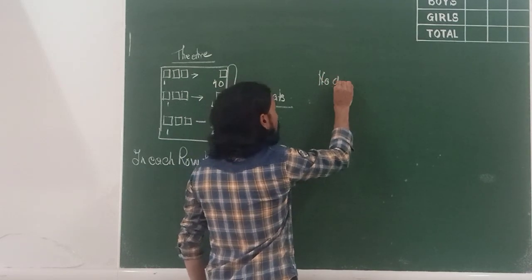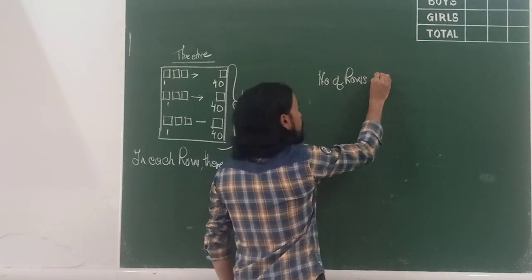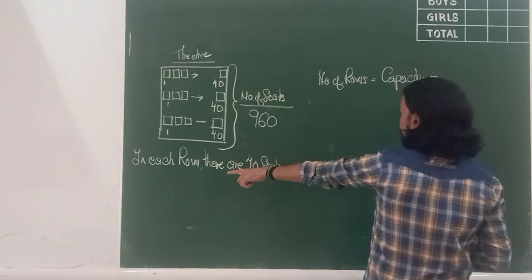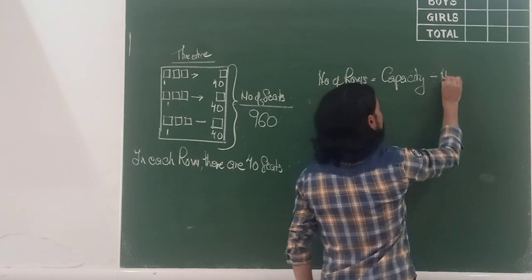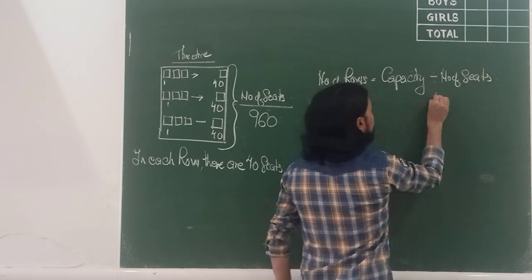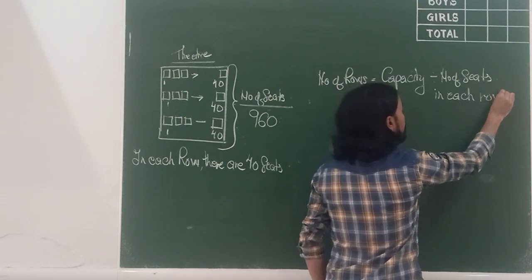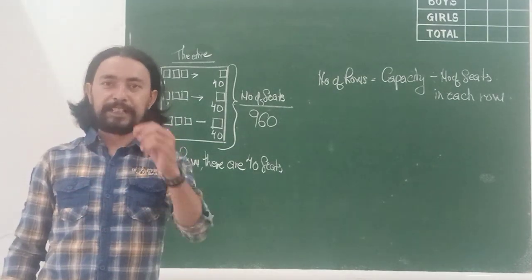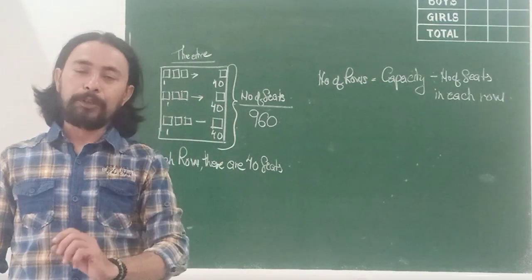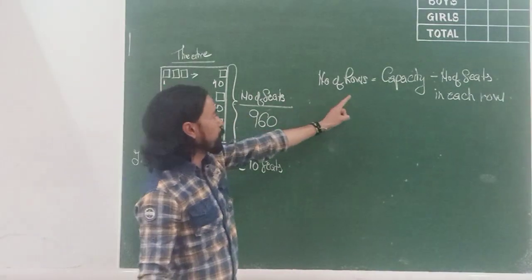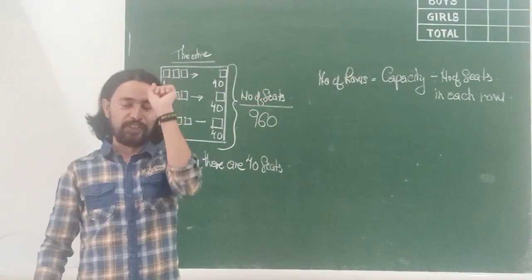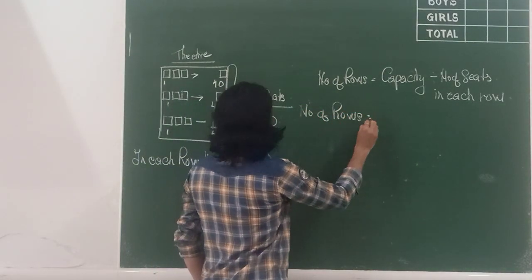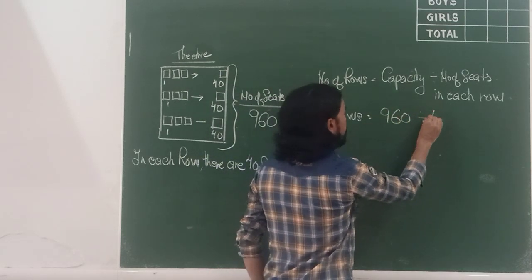So, the number of rows will be equal to the capacity divided by the number of seats in each row. There are 960 seats and each row has 40 seats. So, if I divide the entire capacity by the number of seats in each row, I will come to know the number of rows. So, number of rows is equal to capacity divided by the number of seats in each row. So, number of rows will be equal to 960 divided by 40.